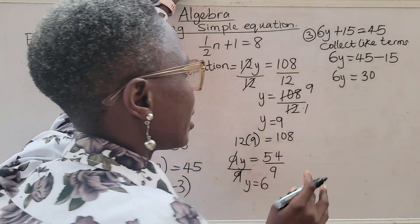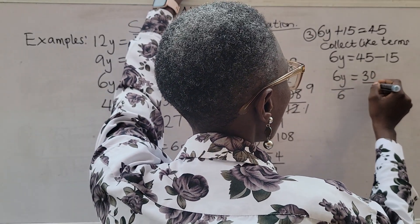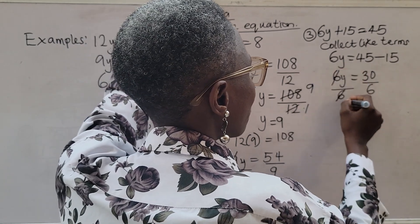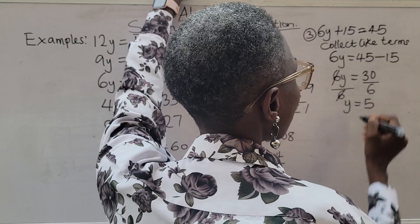6y equals 45 minus 15. That's 30. What do we do next? We divide both sides by the coefficient of y. Now let's divide. 6 is canceling 6. We are left with y. 30 divided by 6. That's 5.